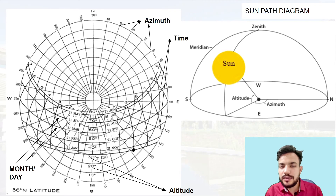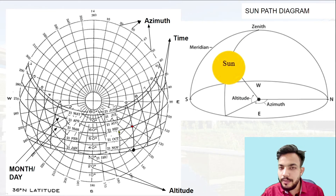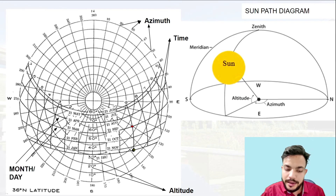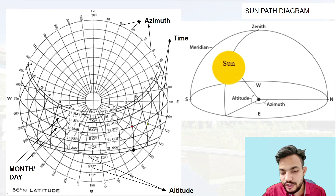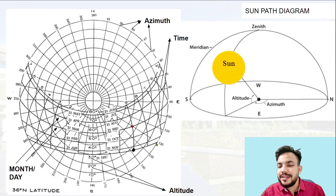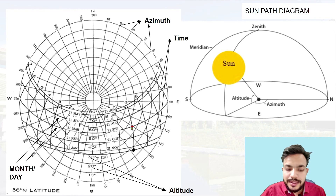Let us take an example. Suppose this red point on the diagram signifies that we are measuring the position of the sun corresponding to 21st September, and the time is 9 am. So it's 9 am on 21st September. Now if you want to locate the position of the sun, you can see the radial lines — these radial lines show the azimuth angle. The radial line corresponding to this red point is making an angle of 120 degrees, meaning the azimuth is 120 degrees — the sun is at 120 degrees from the north direction.